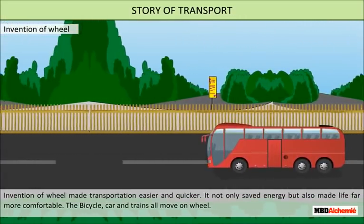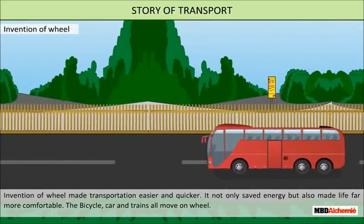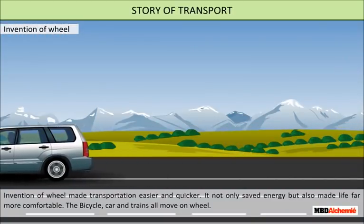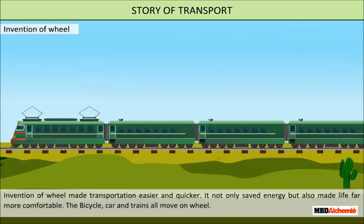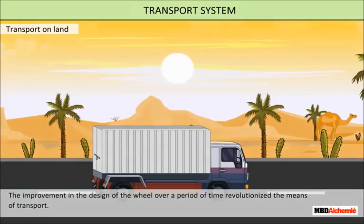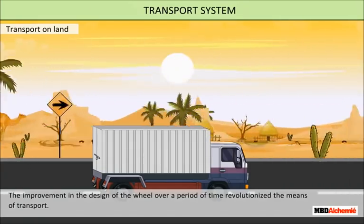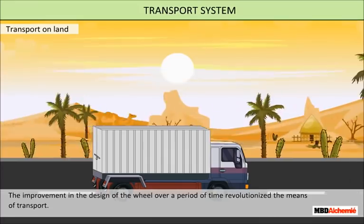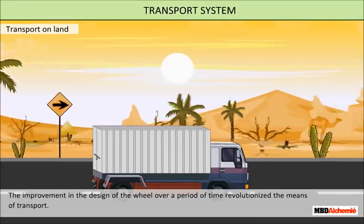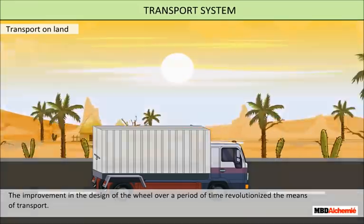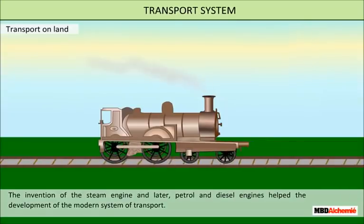The bicycle, car, and trains all move on wheels. Transport on land improved greatly as the design of the wheel was refined over a period of time, which revolutionized the means of transport. The invention of the steam engine further advanced transportation.